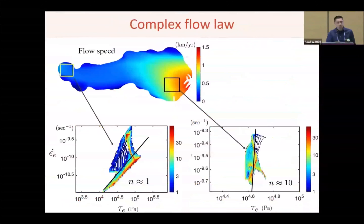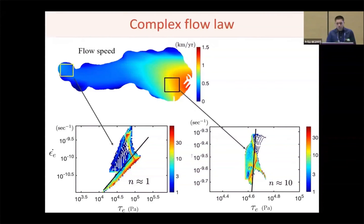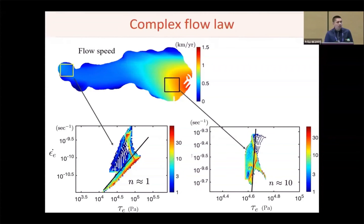Let's first look at the stress-strain relations on two random locations on the ice shelf. Unfortunately, neither of them shows a clear relation, and they also seem to follow different profiles. This means the ice shelf rheology could be much more complicated than what we thought.